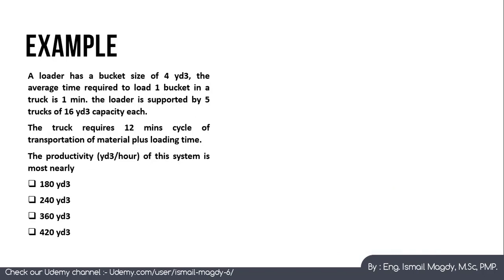Here is another example. A loader has a bucket size of 4 cubic yards. The average time to load one bucket into a truck is 1 minute. The loader is supported by five trucks of 16 cubic yard capacity each. The truck requires a 12-minute transportation cycle plus loading time. We want to find the productivity in cubic yards per hour for this system.